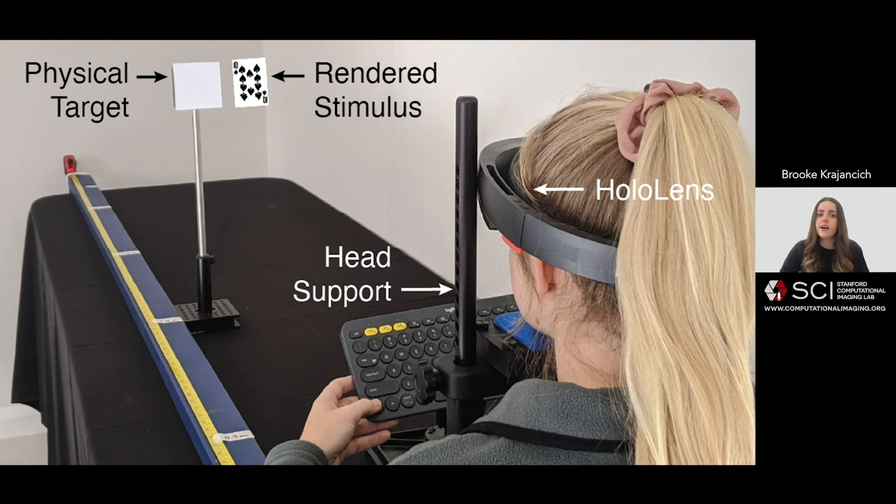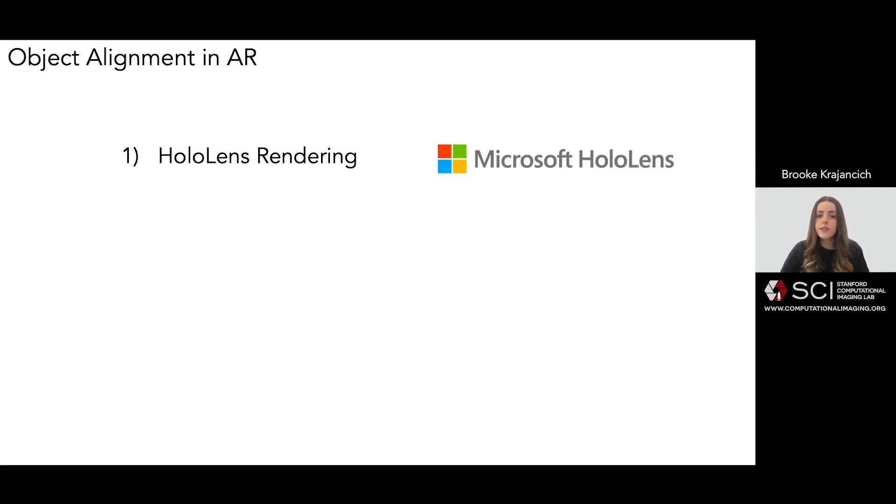Similarly to the VR user experiment, we also wanted to demonstrate that a more accurate calibration of the HoloLens could not sufficiently improve the alignment accuracy. As such, the subjects viewed the stimulus in three rendering conditions.